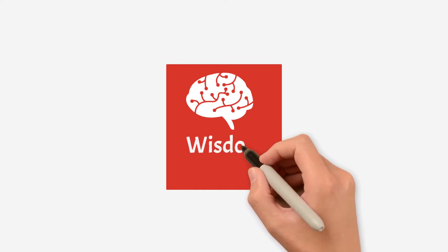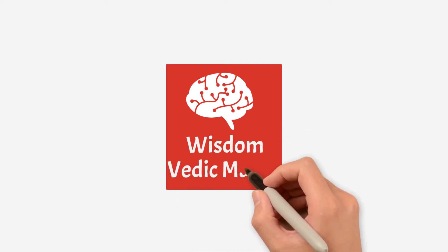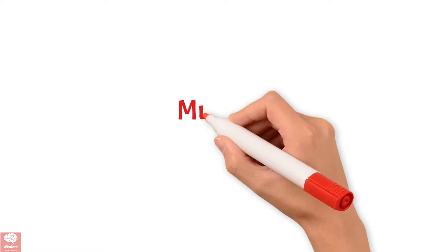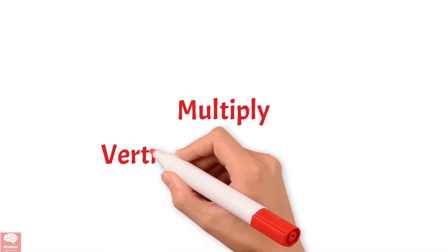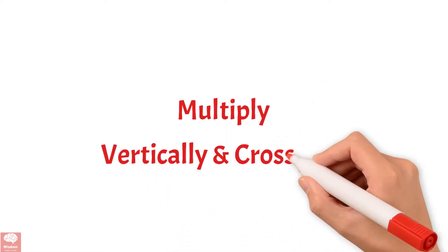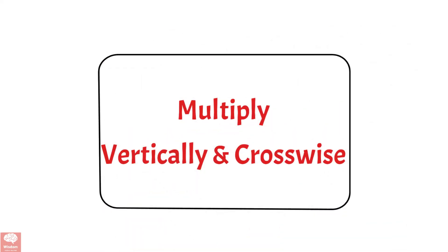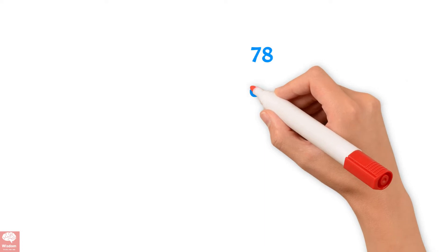Welcome to Wisdom Radigmats. In this video, we will learn the Radigmat technique: multiply vertically and crosswise. Let us see the example: 78 times 69.